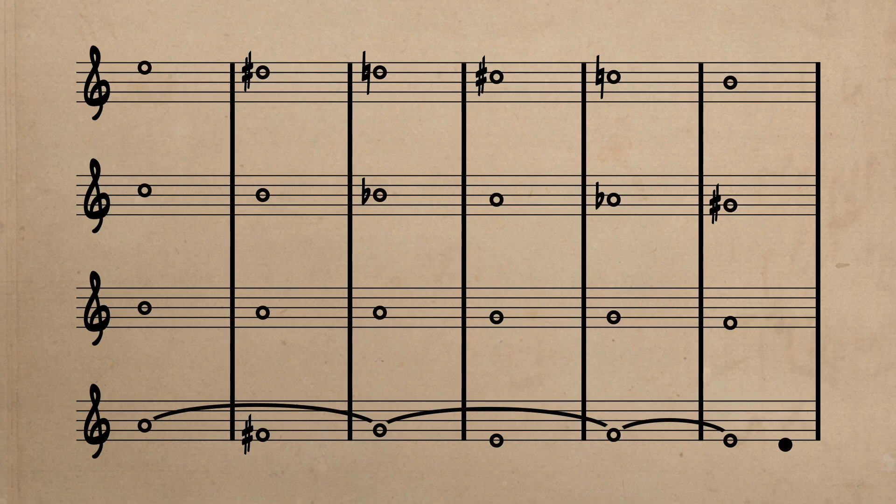In the second to lowest stave, we have a very plain stepwise descent that utilizes oblique motion for measures two to three and then four to five. And in the two highest staves, we have lines that mirror the core design of the melody. E descends chromatically to B in the highest stave and C descends to G-sharp in the one below.